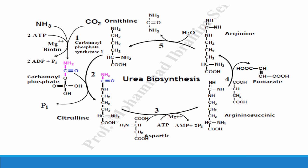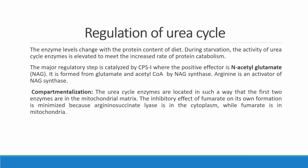The urea cycle can also be called the Krebs-Henseleit cycle. It can be regulated: the first reaction — formation of carbamoyl phosphate — catalyzed by carbamoyl phosphate synthetase I, is allosterically regulated.